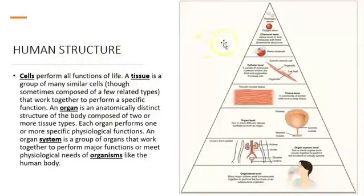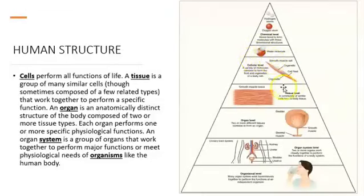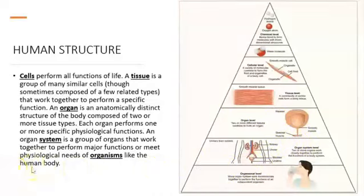Cells are composed of organelles. We can go even further by saying that organelles are composed of molecules, and molecules are composed of atoms, because everything in this world is made of atoms. To summarize: cells together form tissues, tissues together form organs, organs together form systems, and systems together form an organism — in this case, the human being.